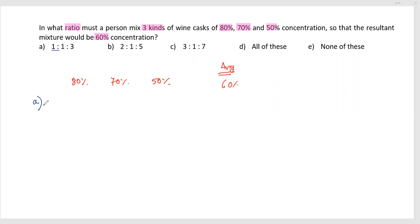Option A states the ratio is 1:1:3. We'll check if this average is possible. Here 1×80, 1×70, and 3×50. So the average will be 80 plus 70 plus 3 into 50 (150), divided by 5.